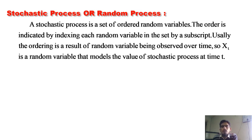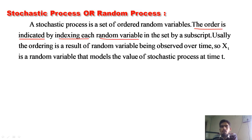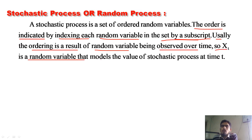A stochastic process is a set of ordered random variables. The order is indicated by indexing each random variable in the set by a subscript. Usually the ordering is a result of random variables being observed over time. So x subscript t is a random variable that models the value of the stochastic process at time t.